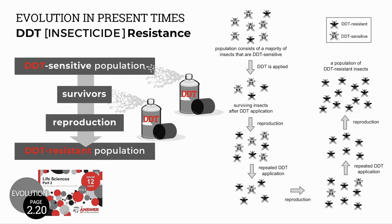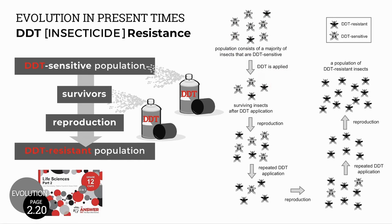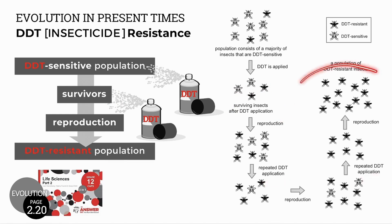So we have a population with a majority of DDT sensitive insects and a few mutated resistant forms. After application of DDT, most sensitive insects die out. The survivors — mostly mutants with DDT resistance — survive and reproduce. With repeated DDT application, eventually the entire population is DDT resistant.